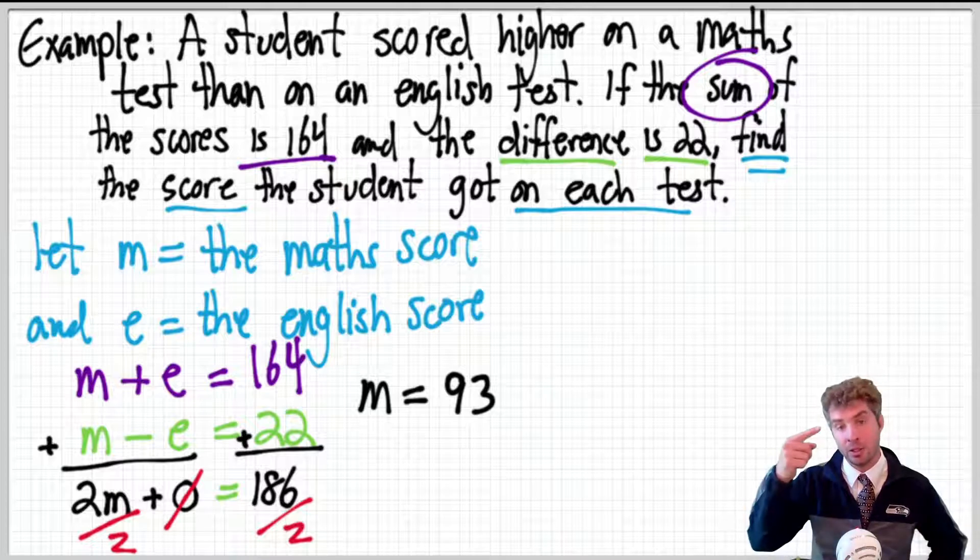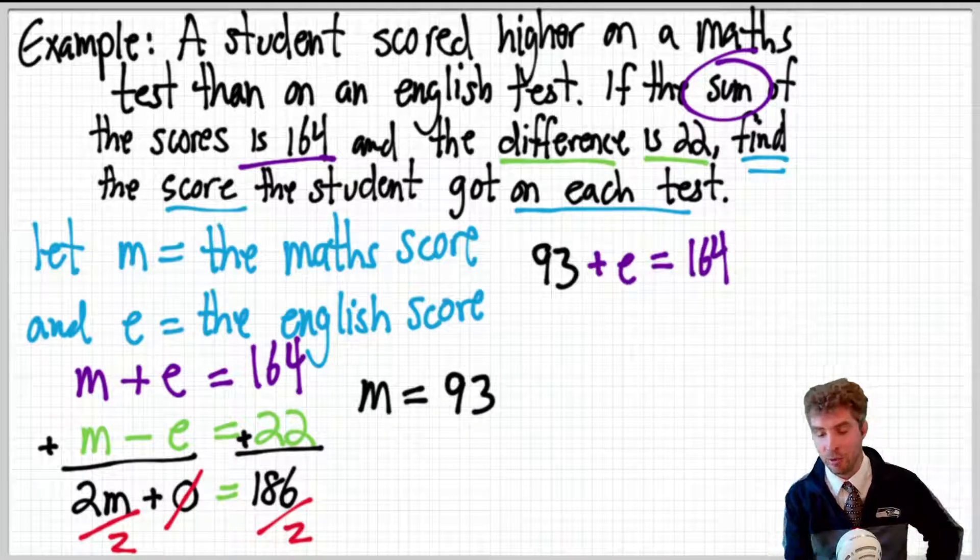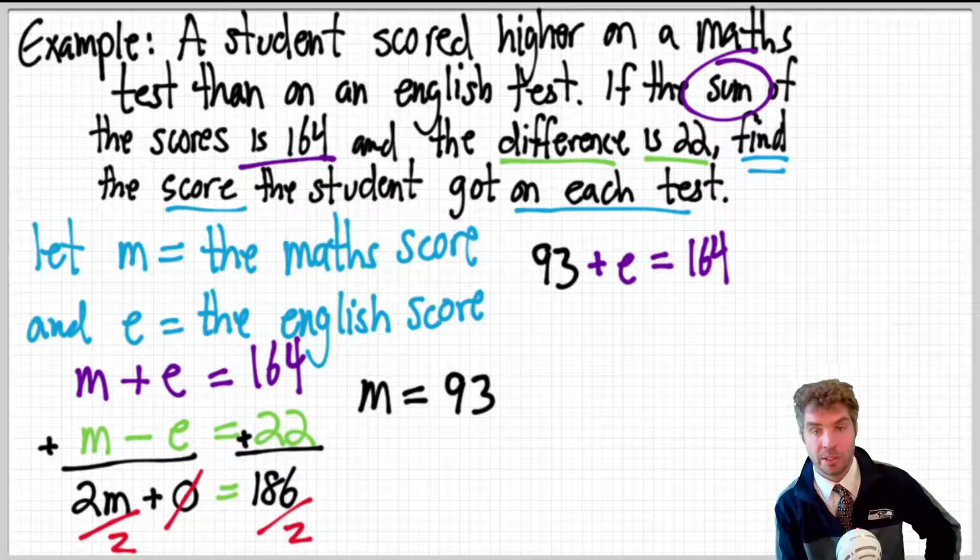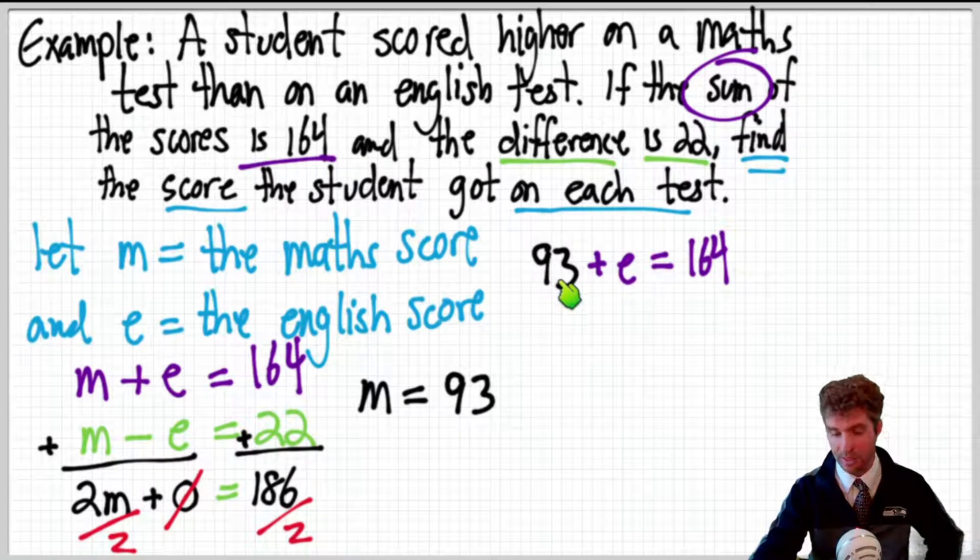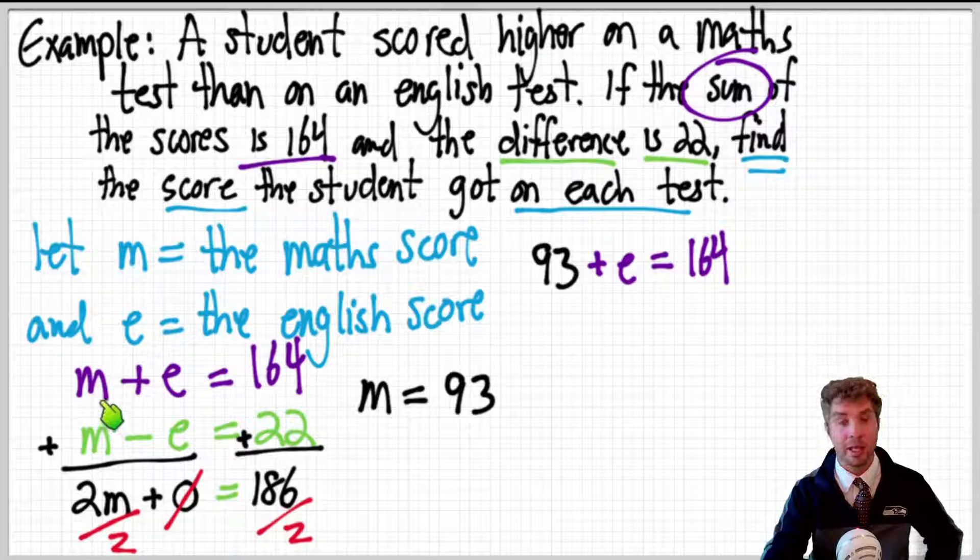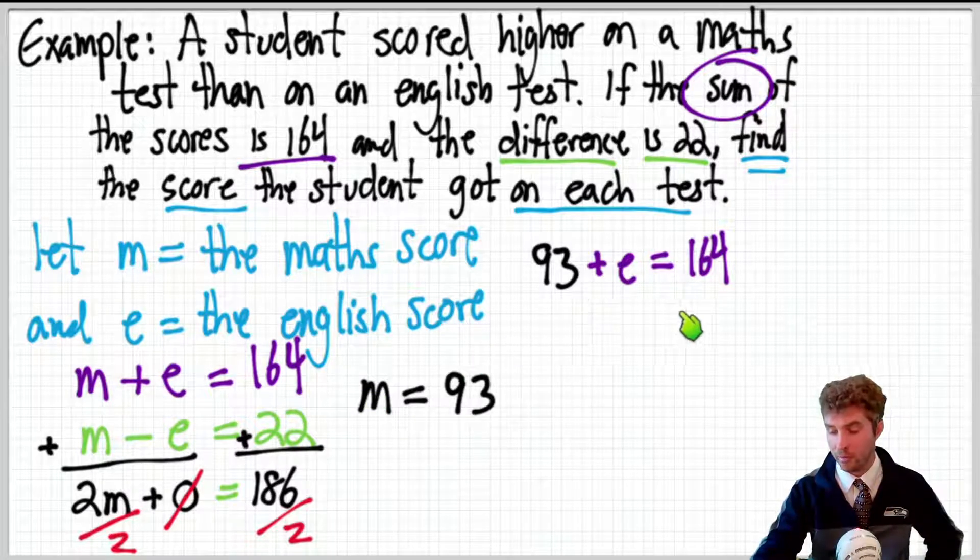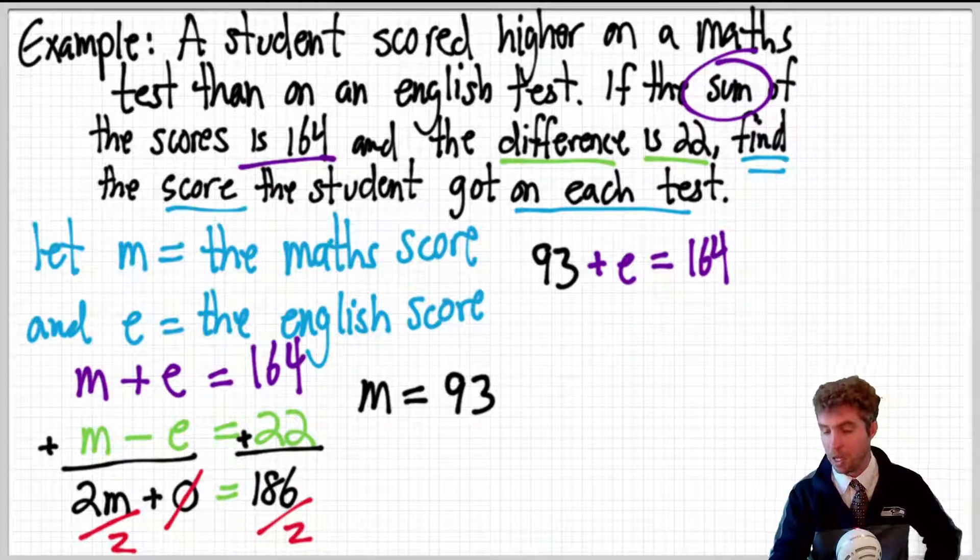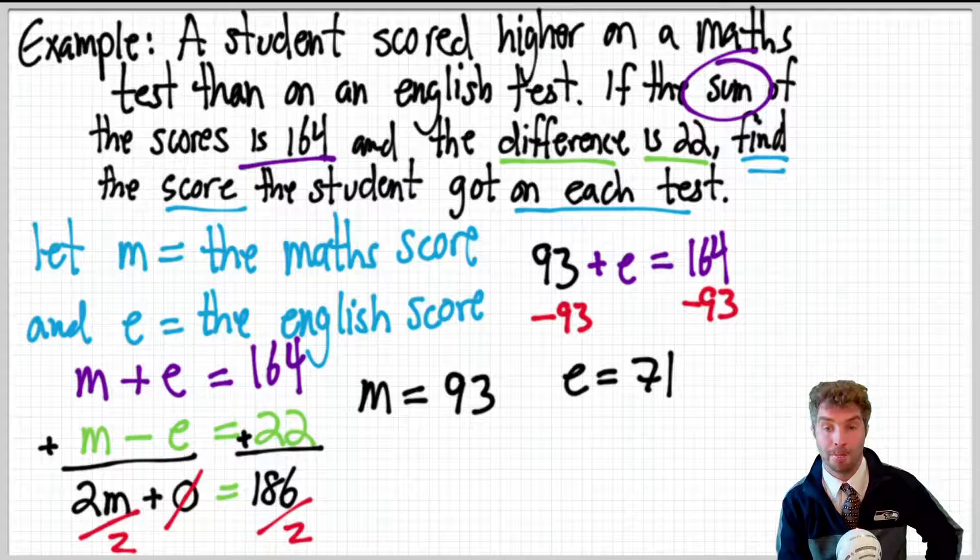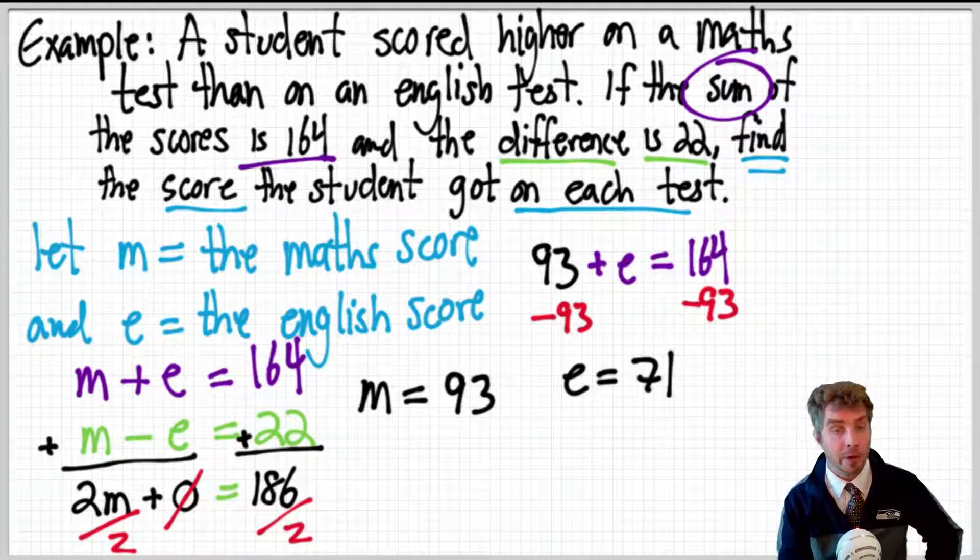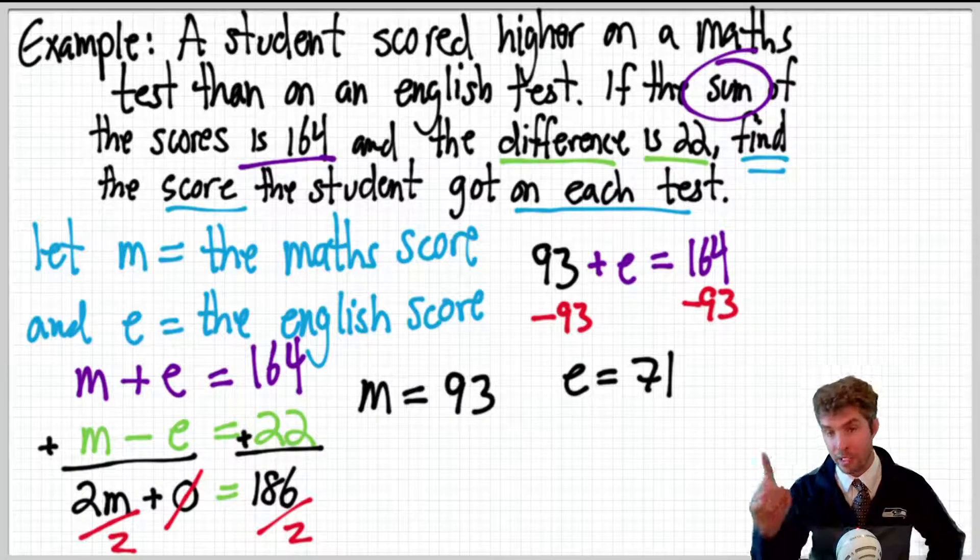Now, we need to take that and plug it into one of the other equations to figure out E, and we know that 93 plus E is 164. So, I put the 93 there because that's the maths score. So, I substituted that for M in this equation. So, M plus E, so we can do 93 plus E equals 164. Subtract 93 from both sides, and we get E equals 71. So, we have our answers now. The maths score is 93, the English score is 71, but we need to check our answer.